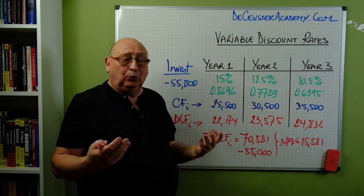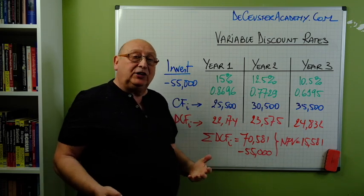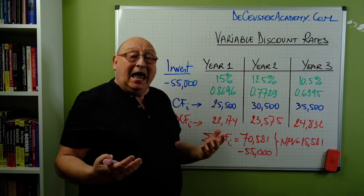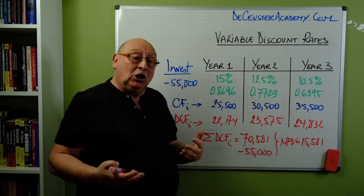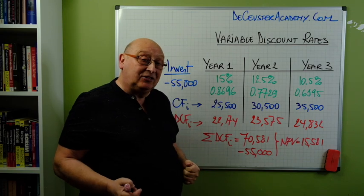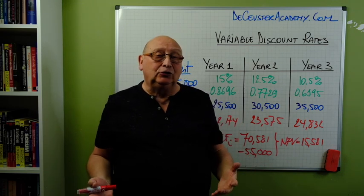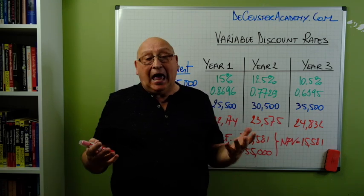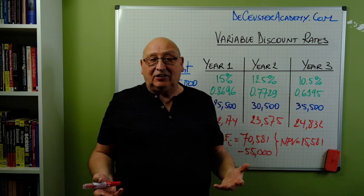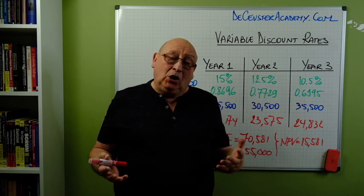The calculations are the same — the only difference is that we have to consider these different interest rates to calculate the discount factors. We calculated the discounted cash flows, added them, and found the net present value. It's a little bit more complex than when we use the classical formulas, because when we have the same discount rate over all years, it's easier. Next we'll look at these calculations in Excel, using both simple calculations and the integrated net present value formula available in Excel.